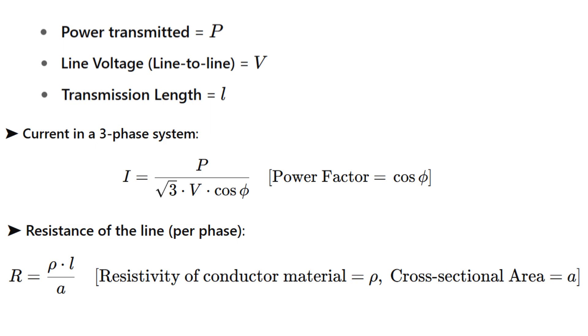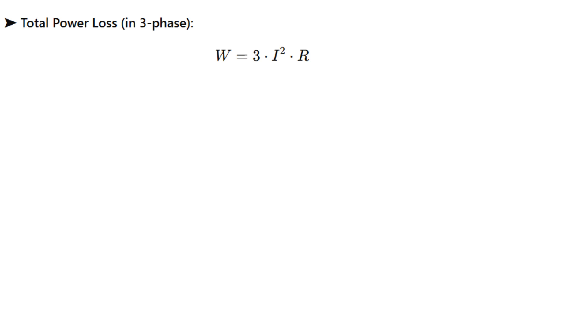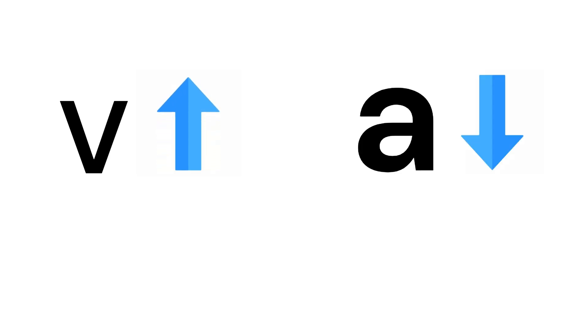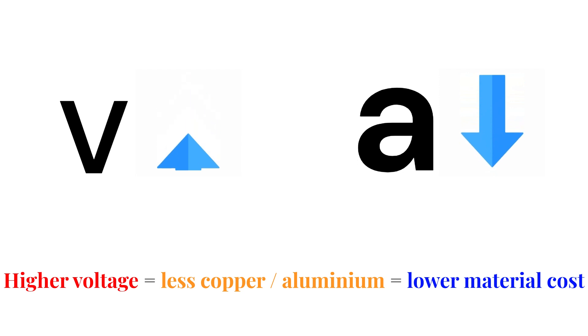And resistance of the conductor R is given by rho into L by A, where rho is the resistivity and A is the cross-sectional area. Now the total power loss W equals 3 times I squared R. Substituting the values, we get power loss as P squared rho L divided by V squared into cos phi squared into area A. From here we find that the area A is directly proportional to P squared rho L divided by power loss into V squared into cos phi squared. That means when voltage V increases, the required cross-section area of conductor decreases drastically. As a result, the total volume of conductor material goes down. Simple takeaway: higher voltage equals less copper or aluminum, which equals lower material cost.